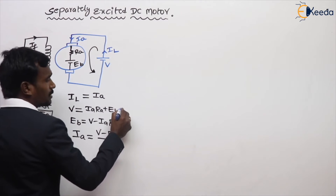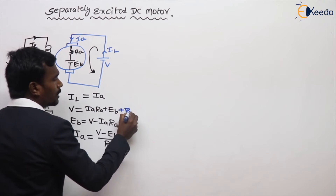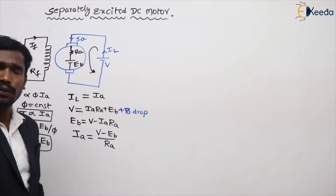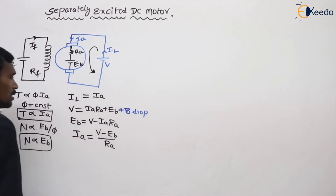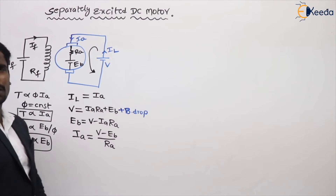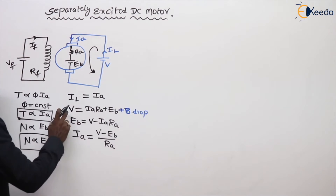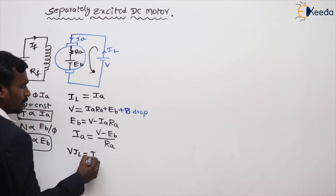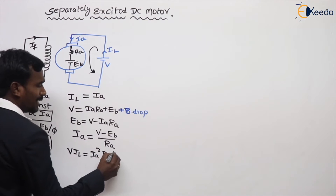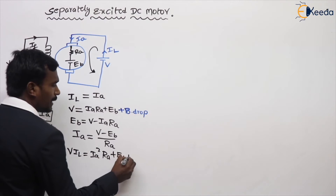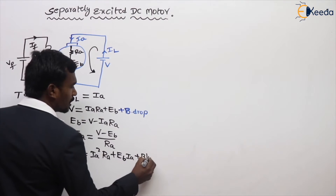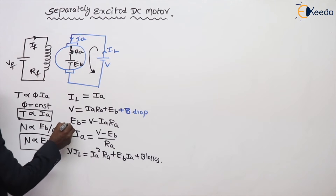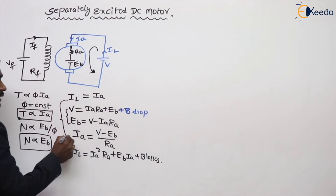There is also some extra drop — the brush voltage drop — which is added to V. The power equation is obtained by multiplying through by current: V into IL equals IA squared times RA, plus Eb times IA. This covers the power equation, voltage equations, and current equations — the complete diagram and mathematics.